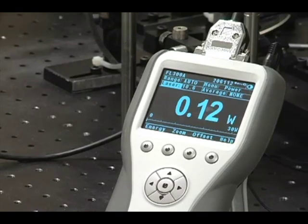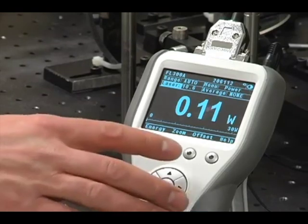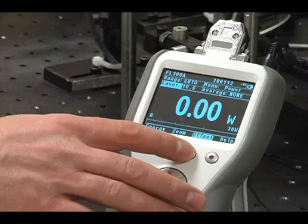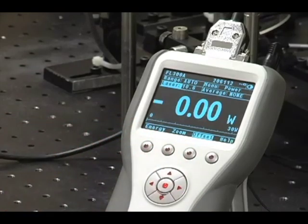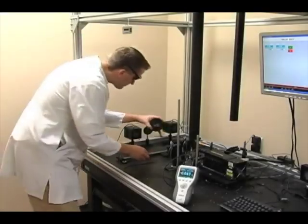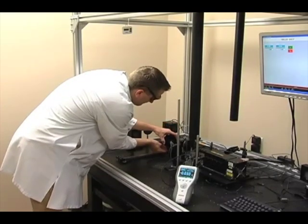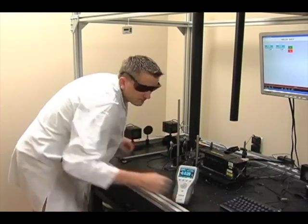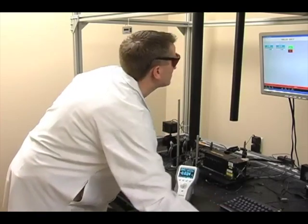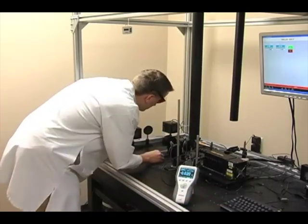Next, we'll have to zero the background ambient readings, so we'll press the offset button. Now we're all set to measure. We have the right wavelength and the right power range. Now turn on the laser on a low power and adjust the beam to be centered on the aperture.